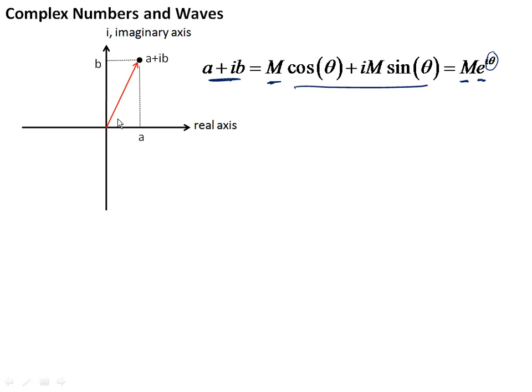This is pretty straightforward, and you probably know this already, that theta, the phase, is the angle it makes between the real axis and this line. The length of the line is M, the magnitude of it. We can represent any complex number by a magnitude and a phase just as we can represent it by the real part plus the imaginary part.